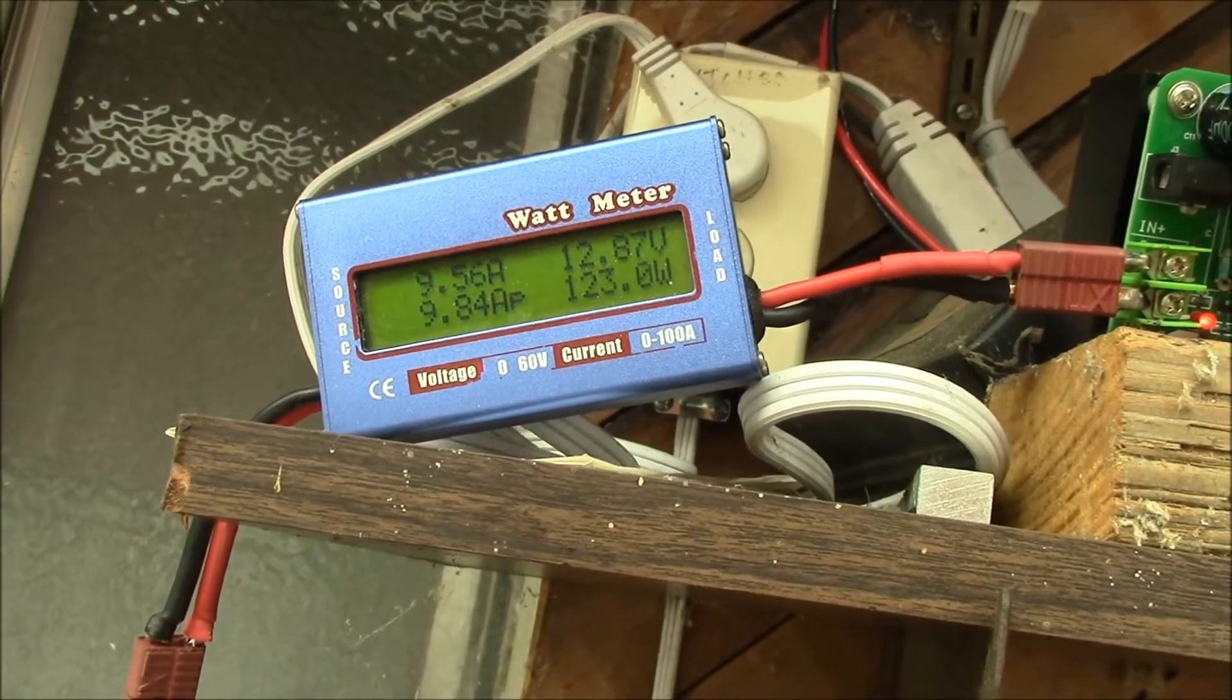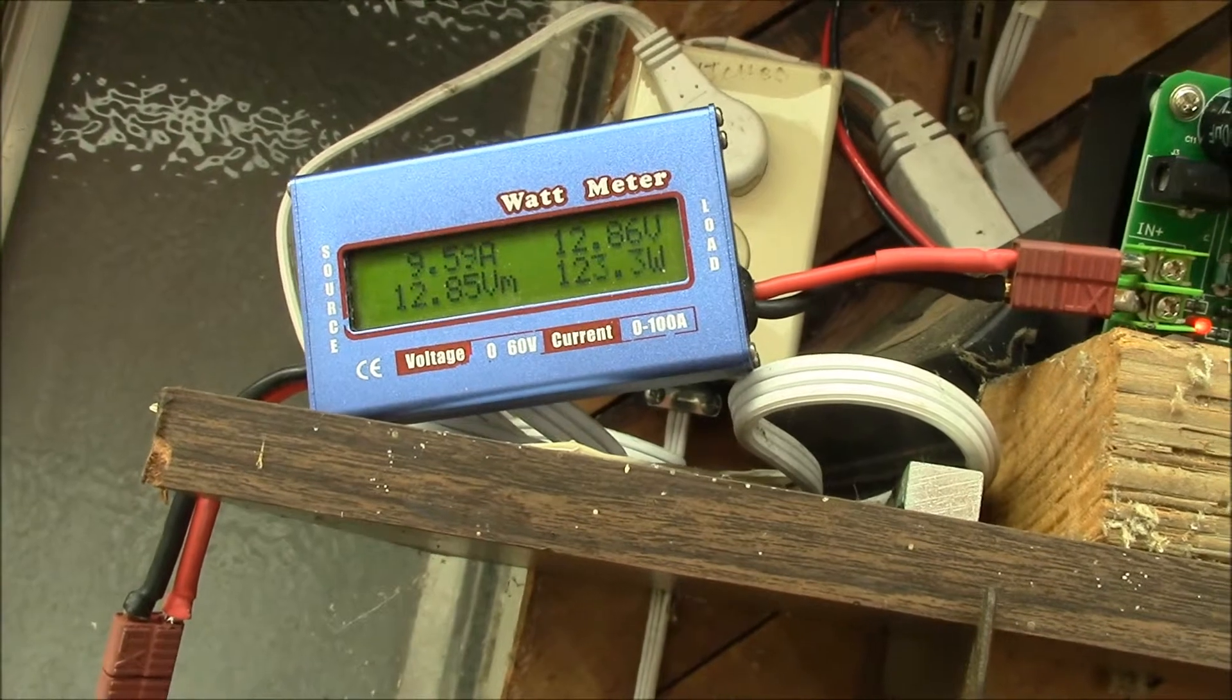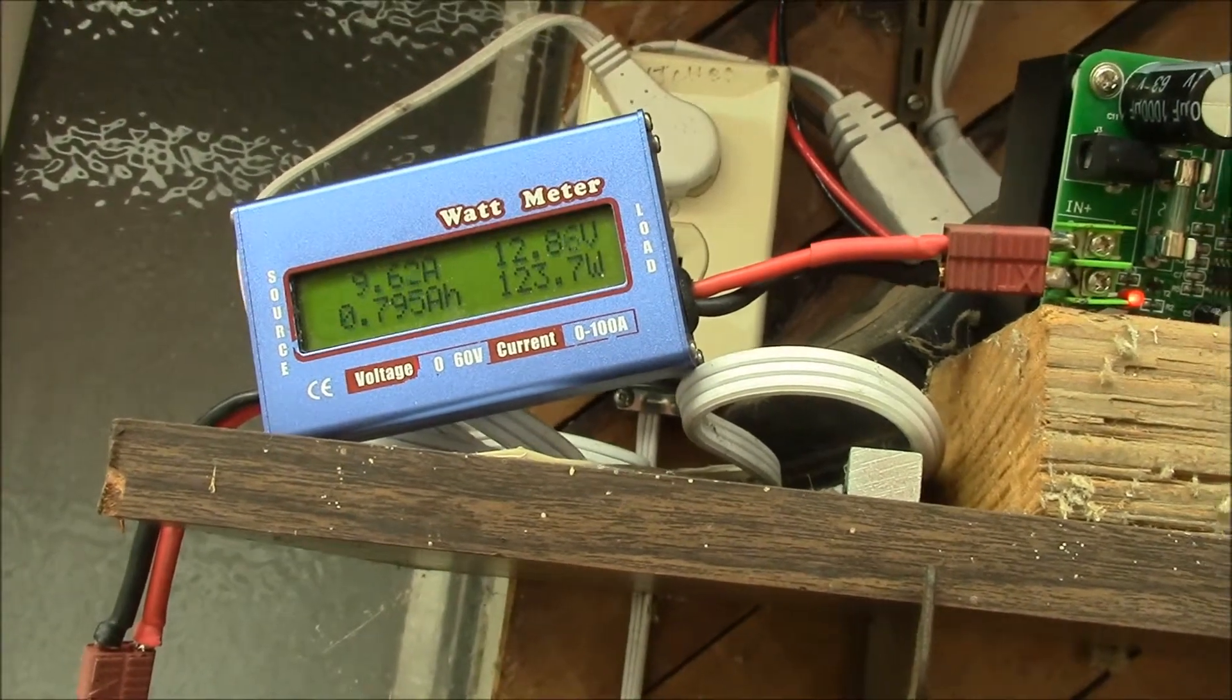Output current stays pretty constant and the input current stays pretty constant as well. So that makes a pretty good DC load if you're looking for something like that. You can just adjust the output current to get the input current you want.